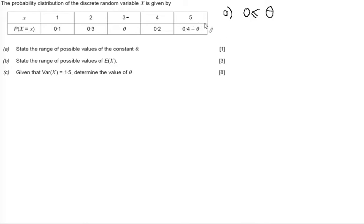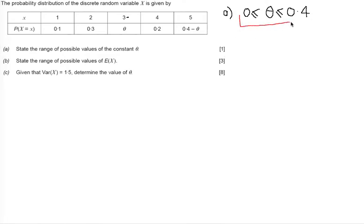From the other probability, we can determine a maximum value for theta. Theta can be anything from 0 up to 0.4, which would make the probability for X equals 5 equal to 0, but it cannot exceed 0.4, as that would make the probability for X equals 5 a negative number. So theta must lie between 0 and 0.4. We get one mark for this range, since it must cover all possible values including 0.11 etc.